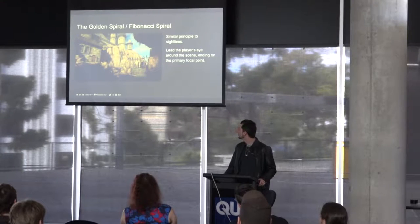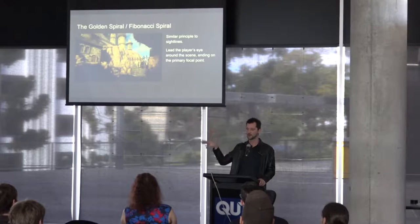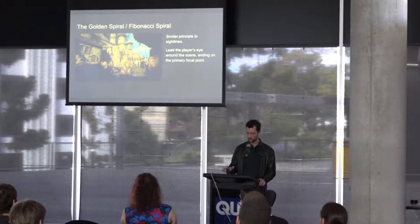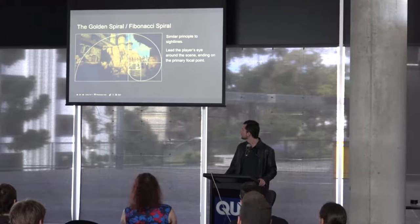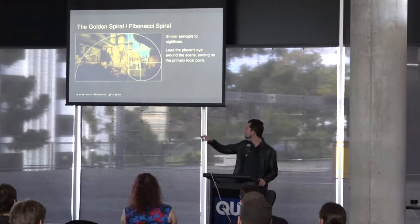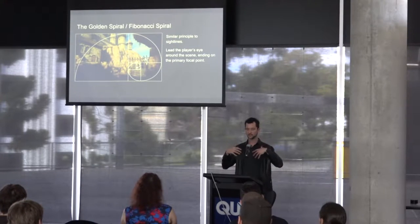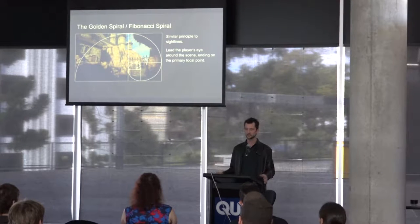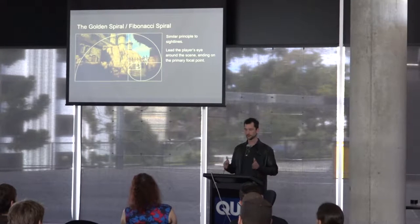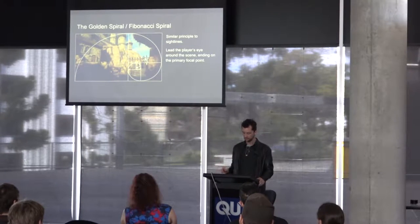Golden Spiral. The general idea is to lead the eye around a scene and end on a particular point. In this example, the eye starts off to the right, trails around across the castle and around the top, down the side, and ends on the gate — which is exactly where the player needs to be going. It's a great way of allowing the player to take in the entire scene at once while ending up where you want them looking.